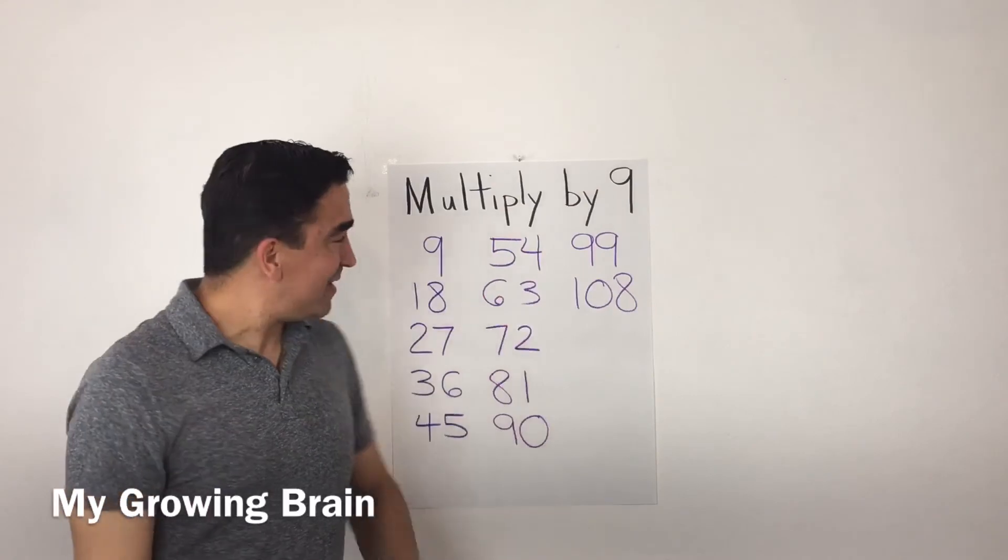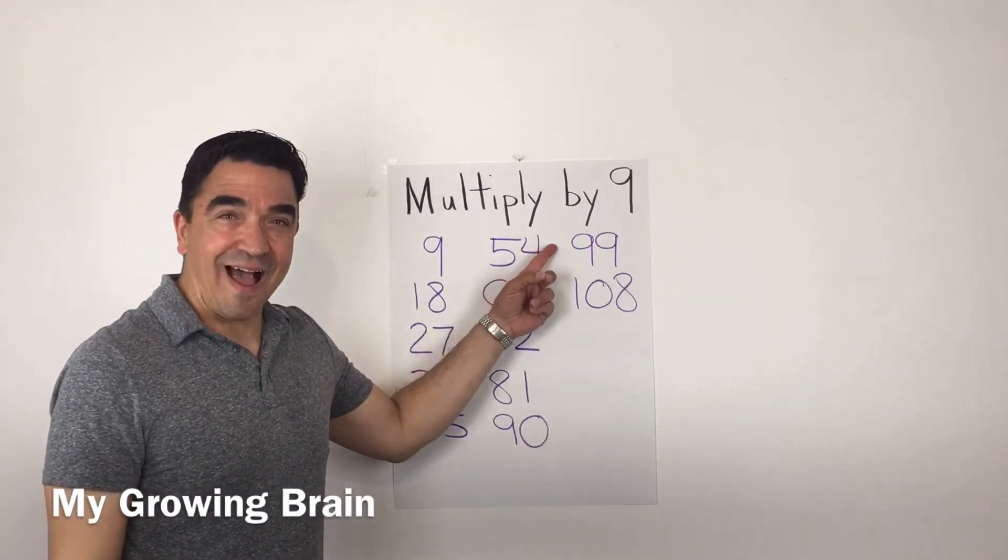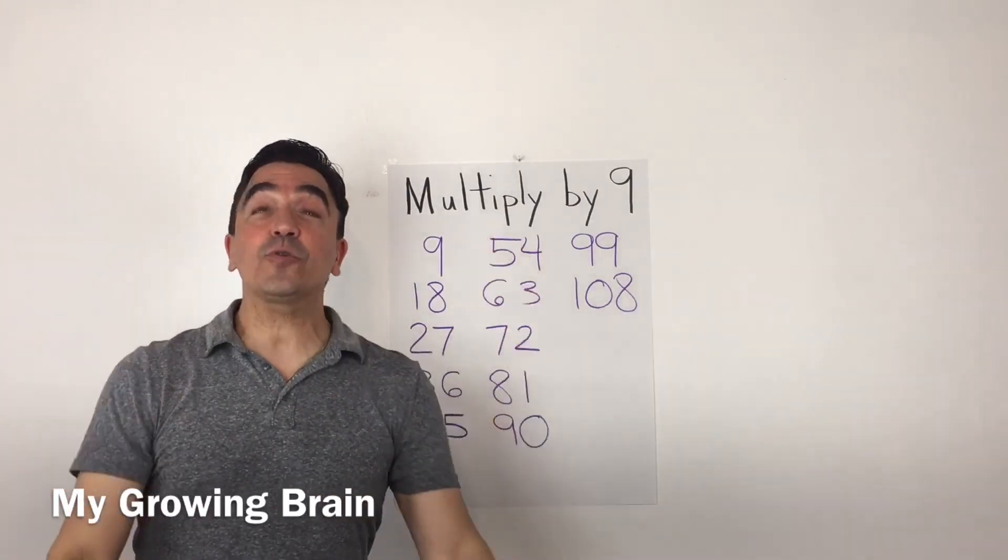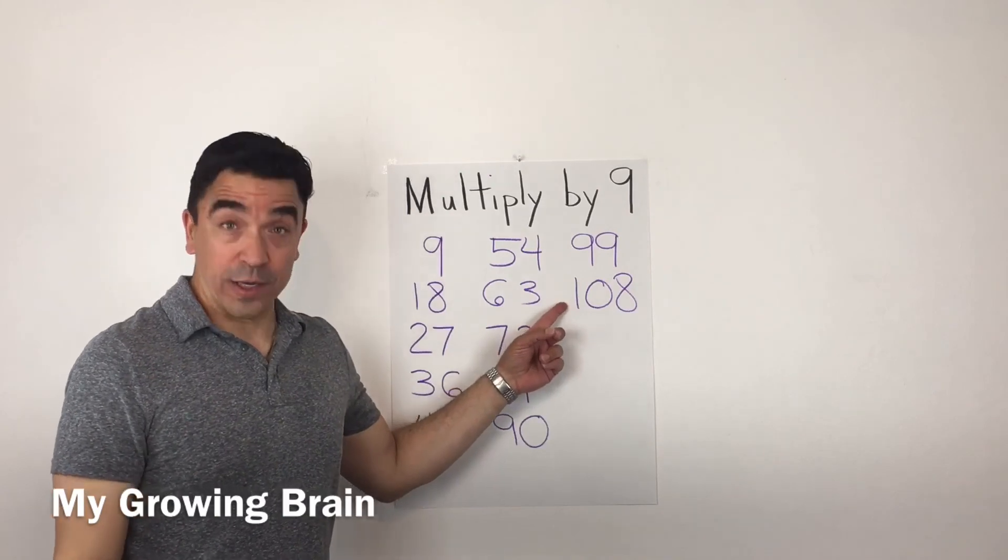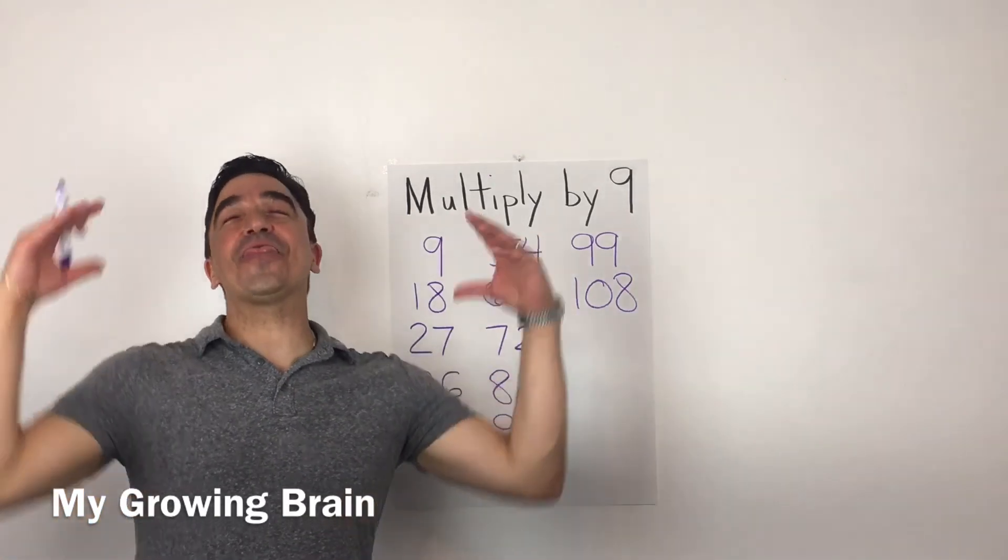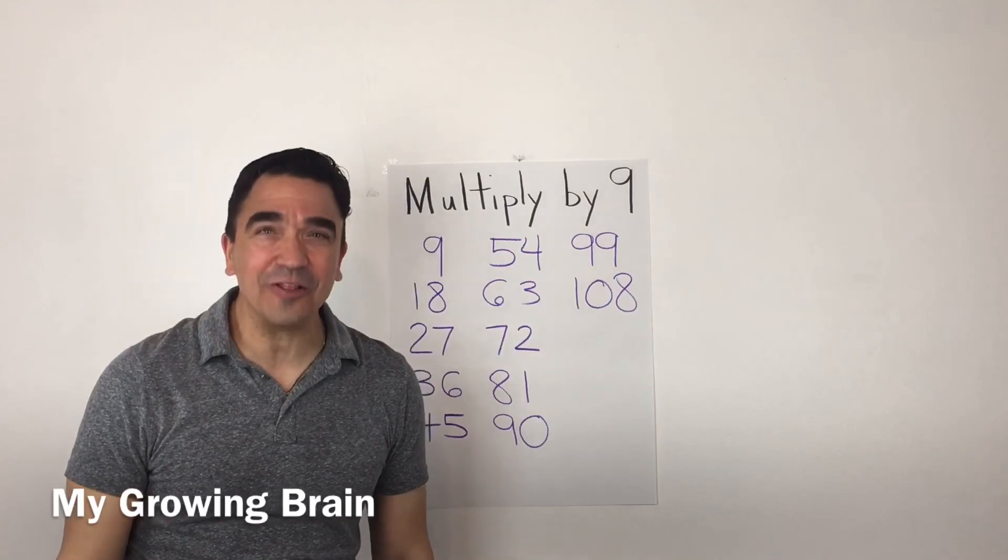Nine times eleven, ninety-nine. And nine times twelve, one hundred-eight. And that concludes our lesson.